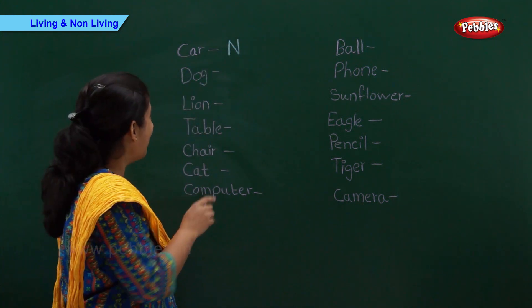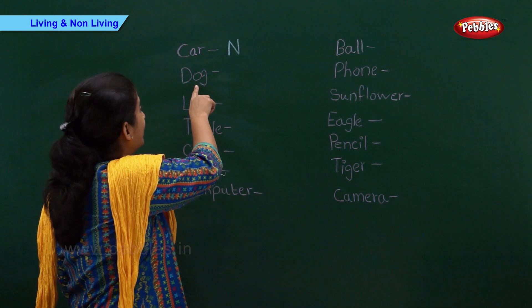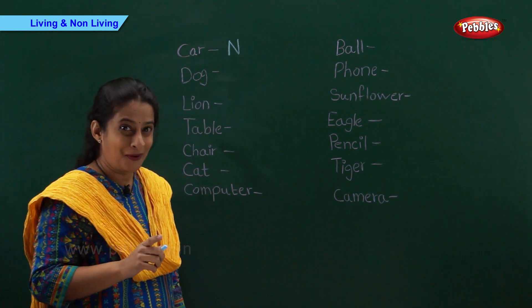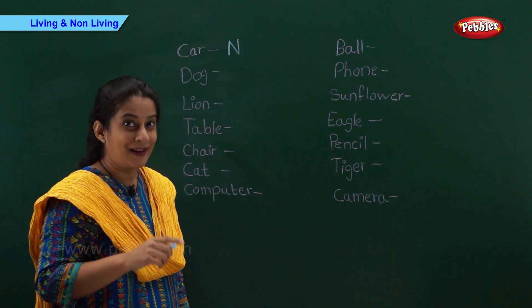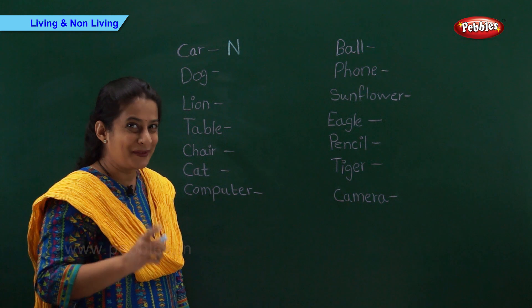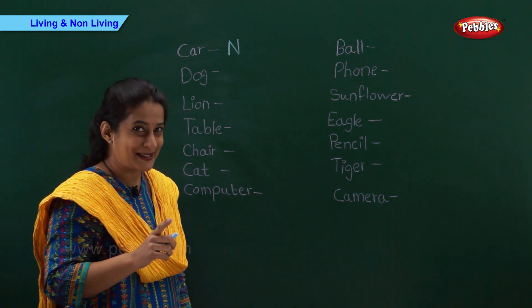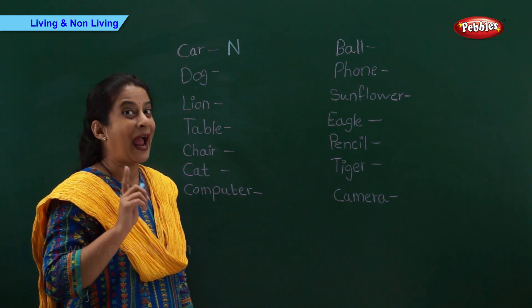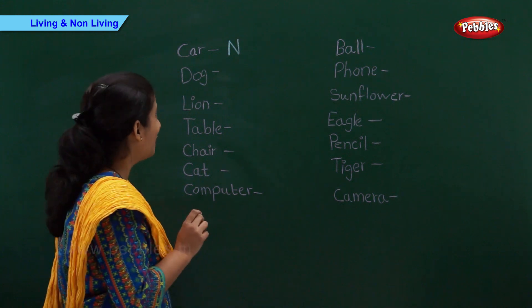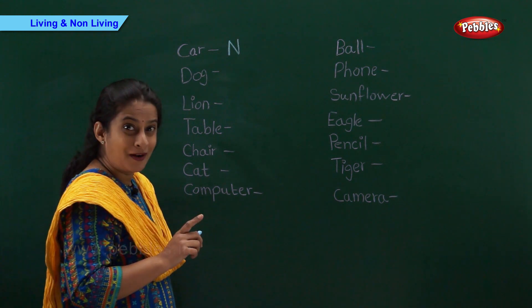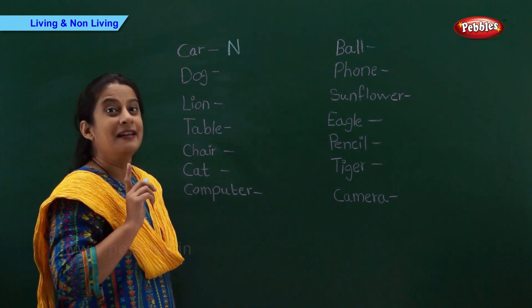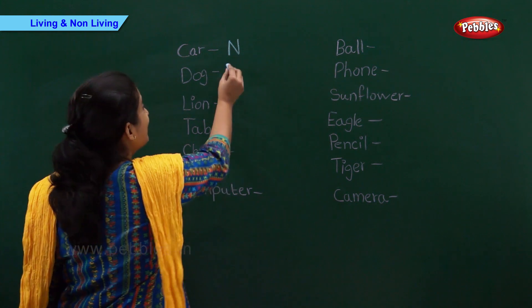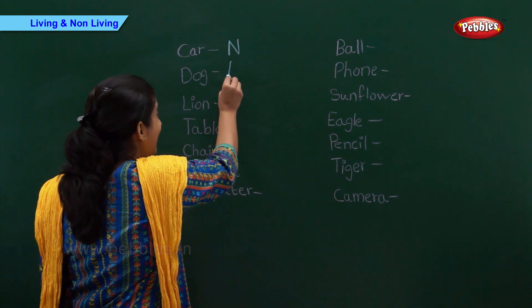Now we have dog. Does a dog grow? Can a dog breathe? Yes. A dog grows and he breathes. So dog is a living thing. Let's write L.